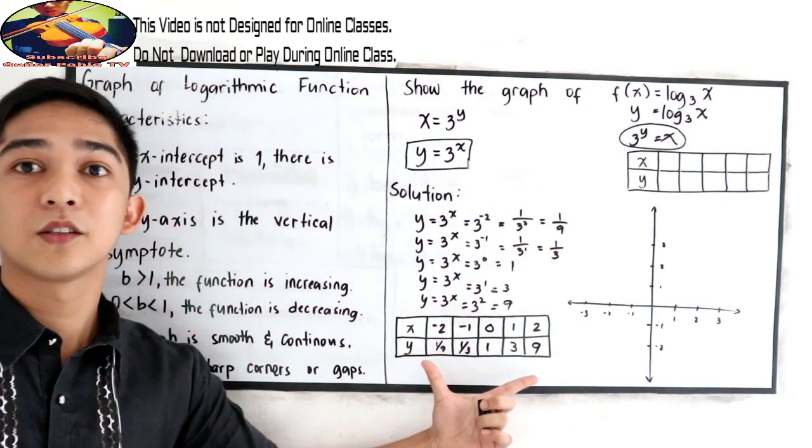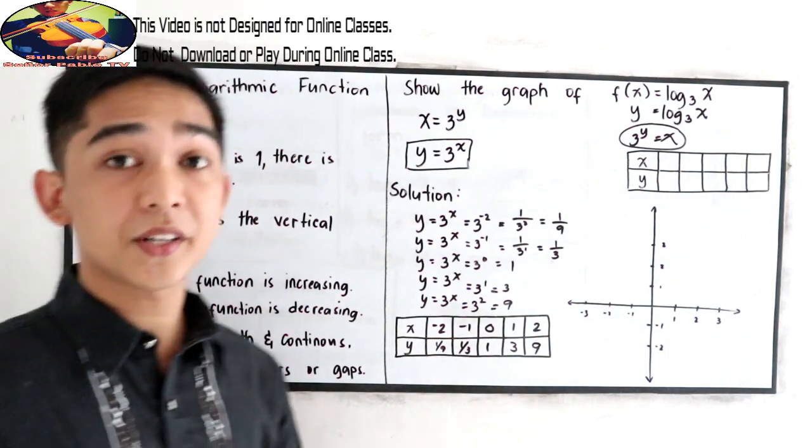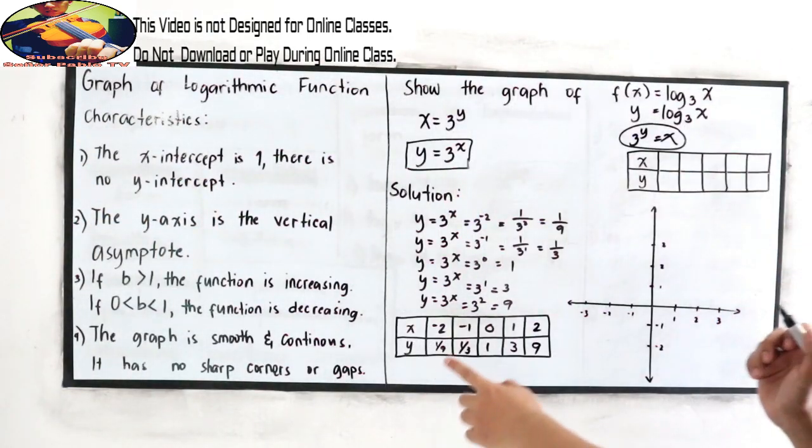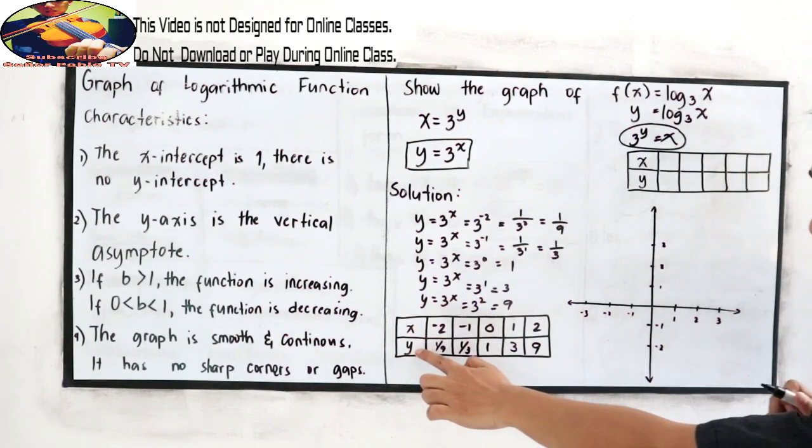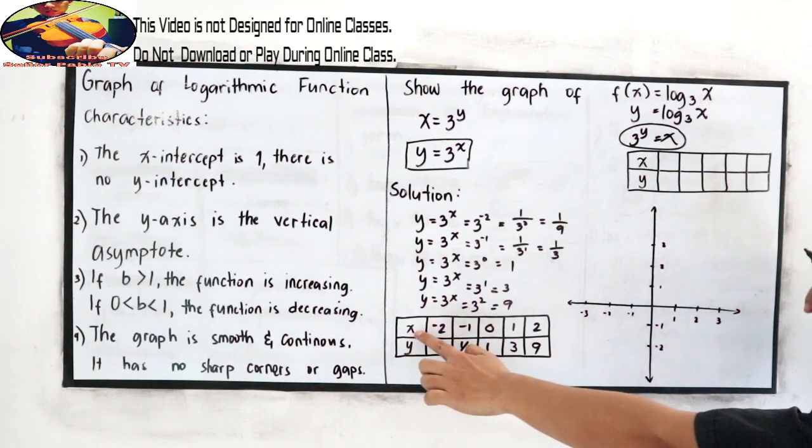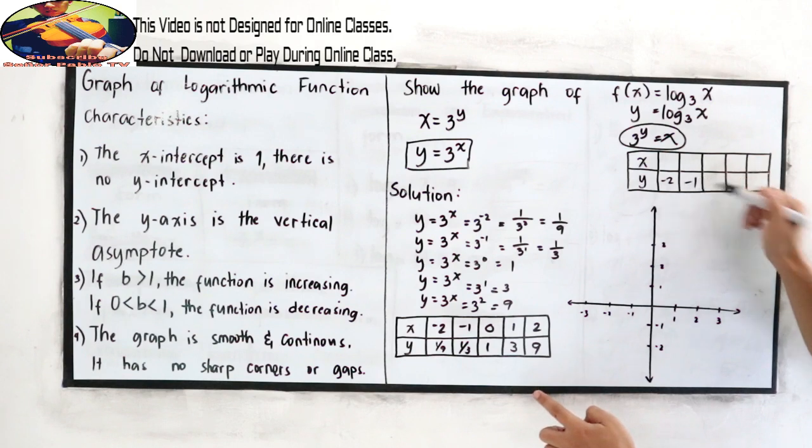We're going to get the inverse of this one. So the inverse is, just interchange. So our x values will become our y. So this will become negative 2, negative 1, 0, 1, 2.